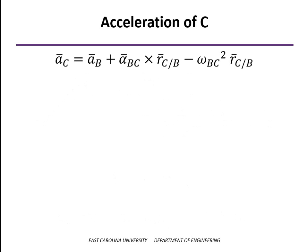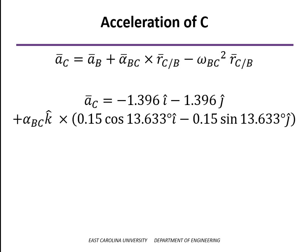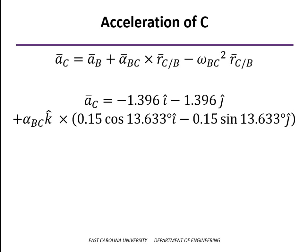And so we'll plug in the things that we know here. We know the acceleration of point C. And add to that the cross product, with alpha BC being an unknown, but we do know that it's about the z-axis, so we'll write that as alpha times k. And the last term, everything's known. We know the angular velocity BC from the velocity analysis that we did earlier, multiplied by the position vector of C relative to B.